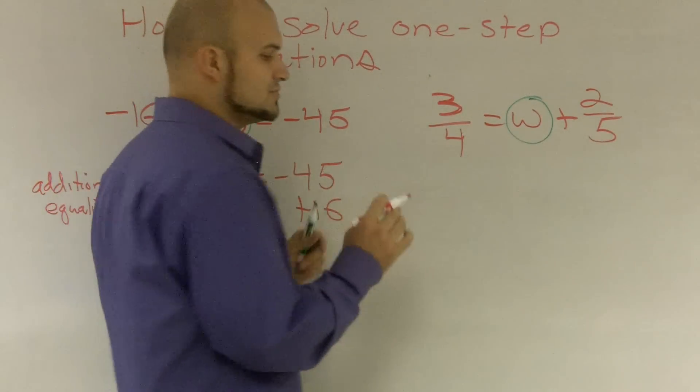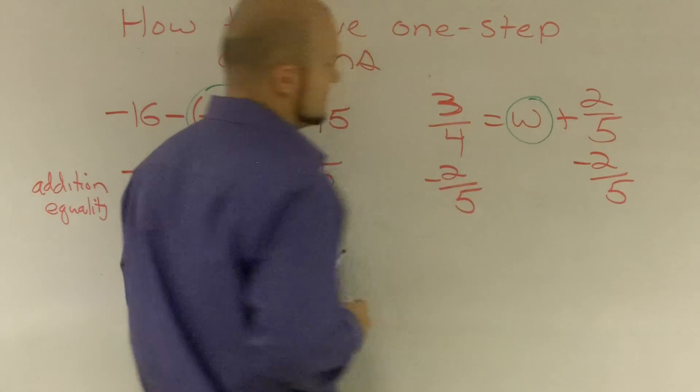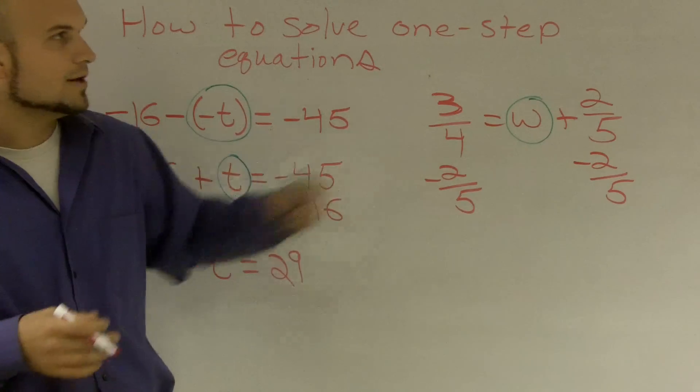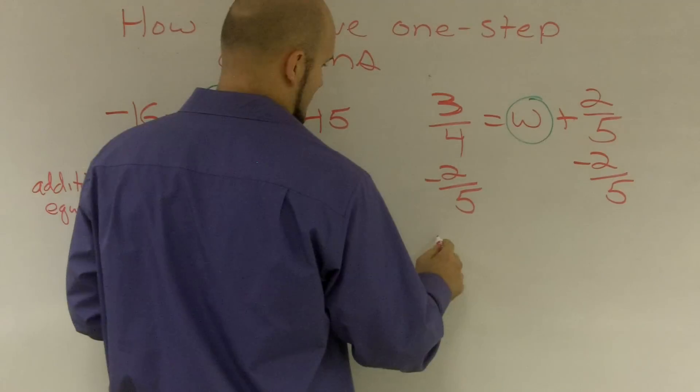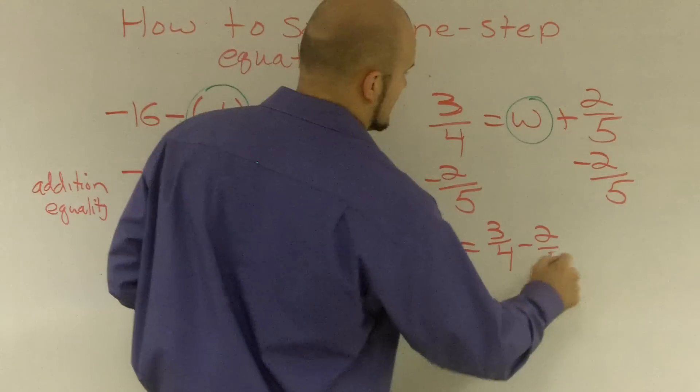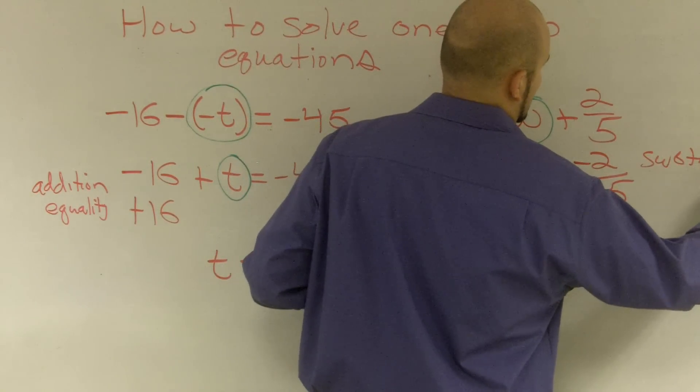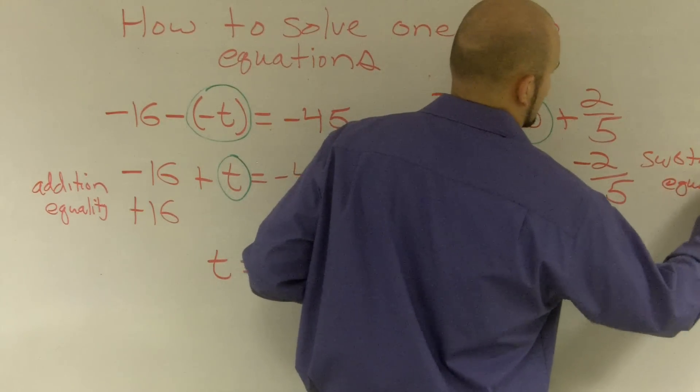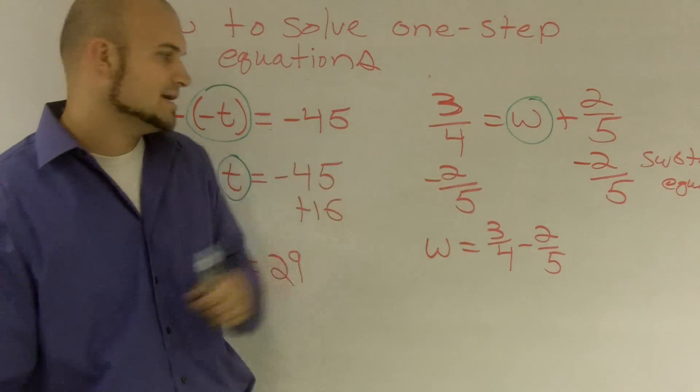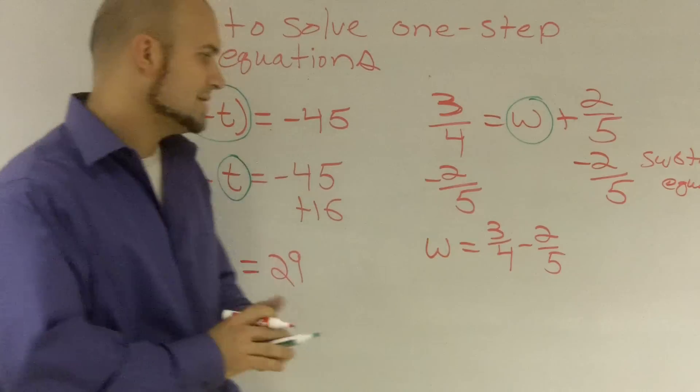So therefore, what I'm going to do is subtract 2/5. Now, when I subtract 3/4 minus 2/5 on this equation, I'm going to obtain w equals 3/4 minus 2/5. Again, I'm going to write the subtraction property of equality to remind me that I'm going to subtract on both sides. So now, when I look at this, I'm subtracting two fractions, so they have to have the same denominators.